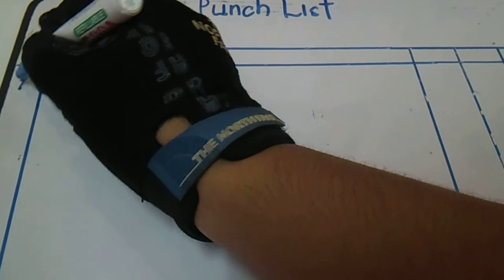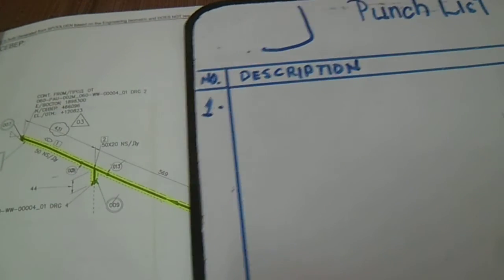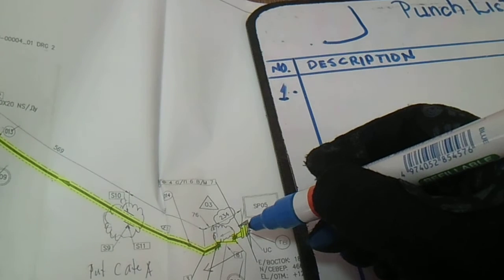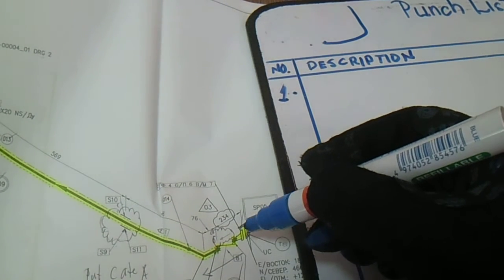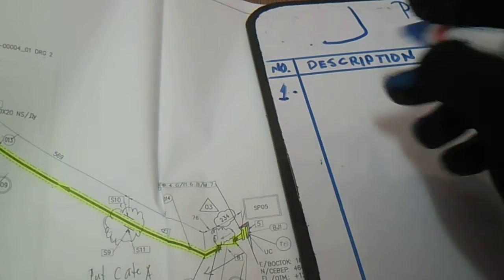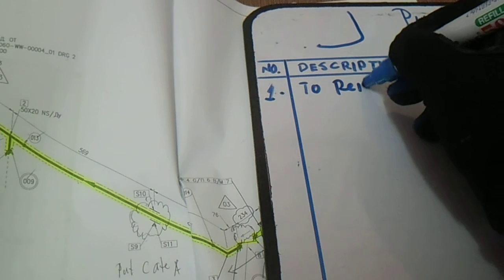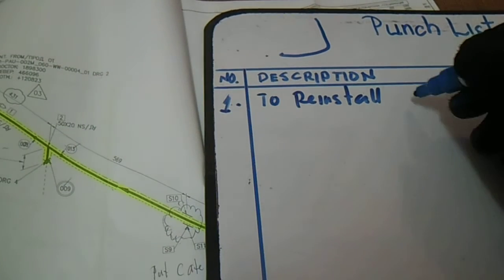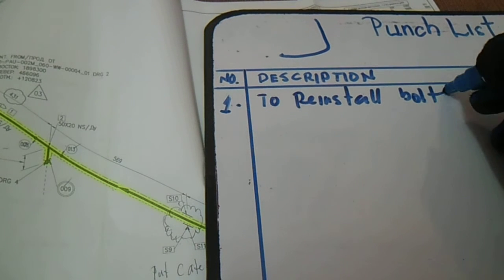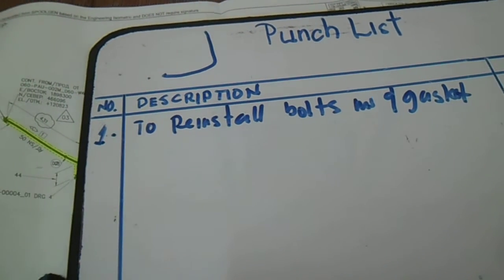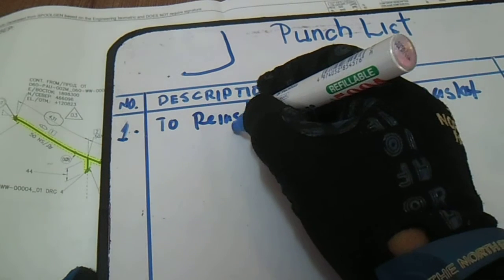From this punch list, number one: you have a comment on this isometric. Let's say you have a bolt here because we have a blind and also a weld, so the comment here is to reinstall bolts, nuts, and gasket after test or after commissioning.